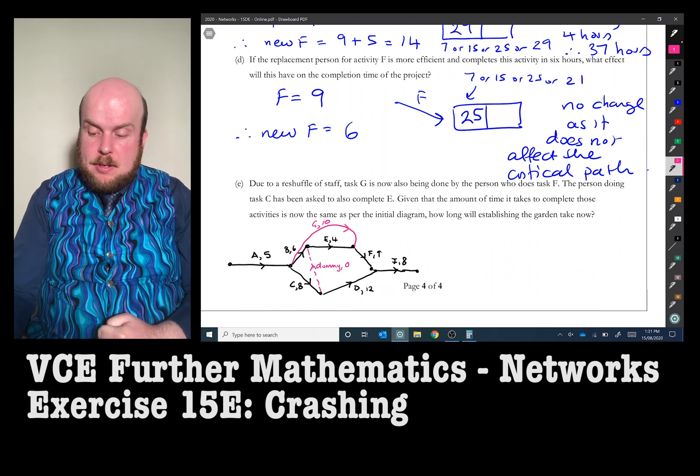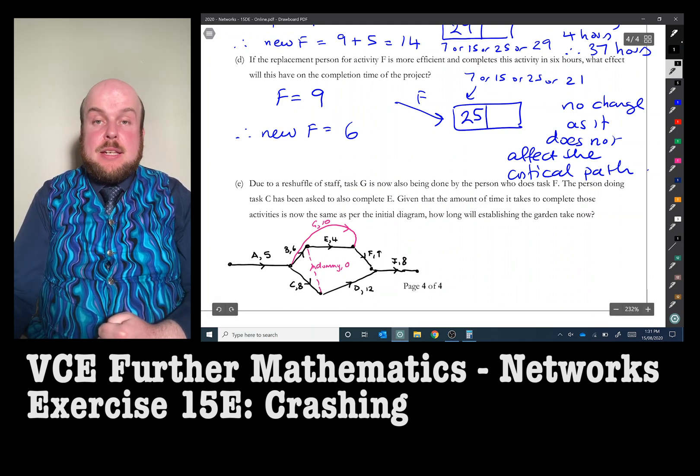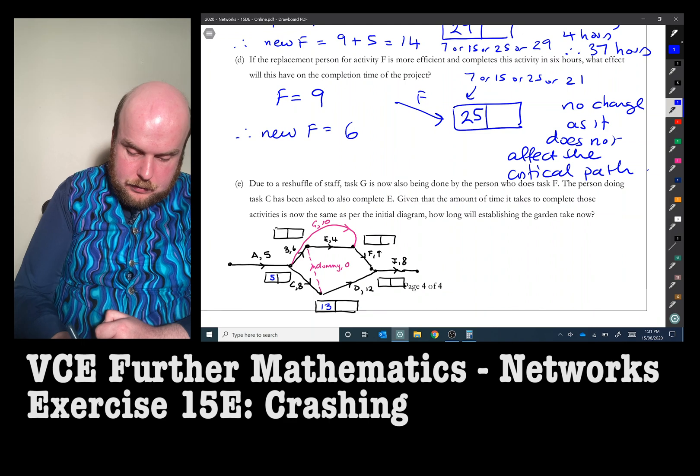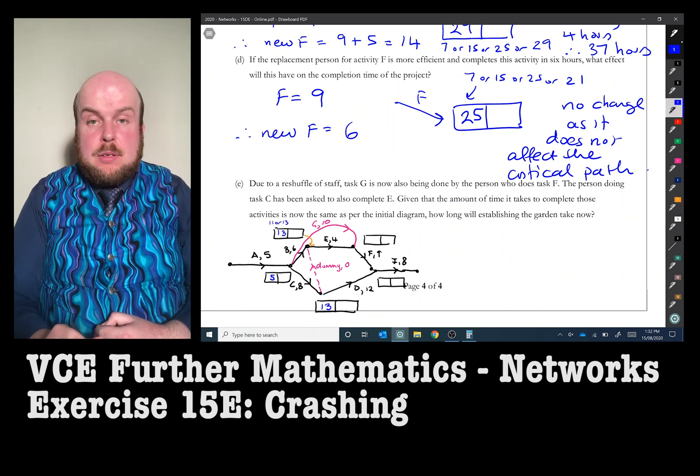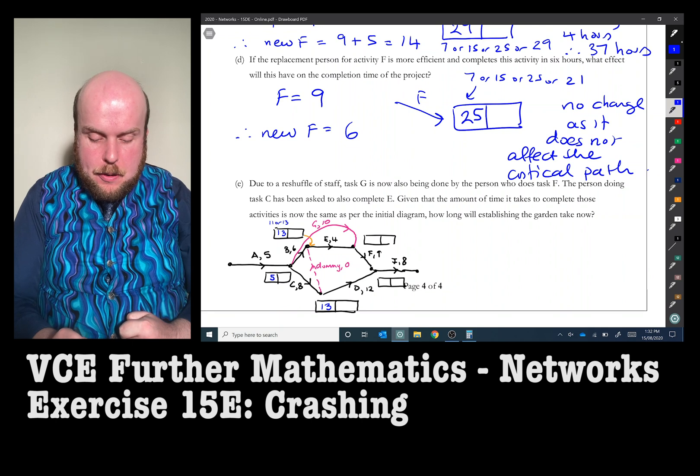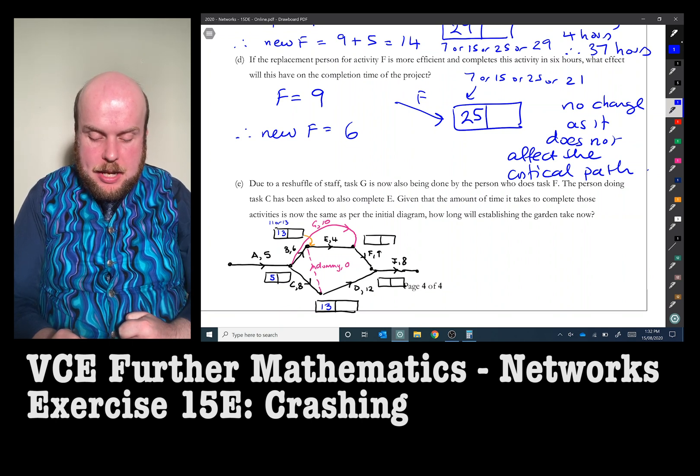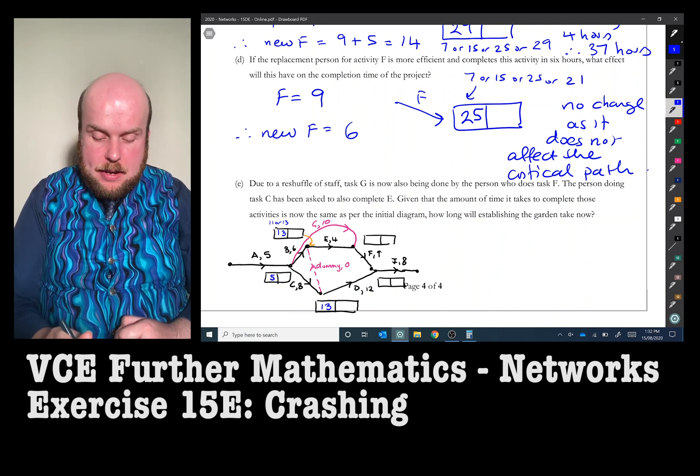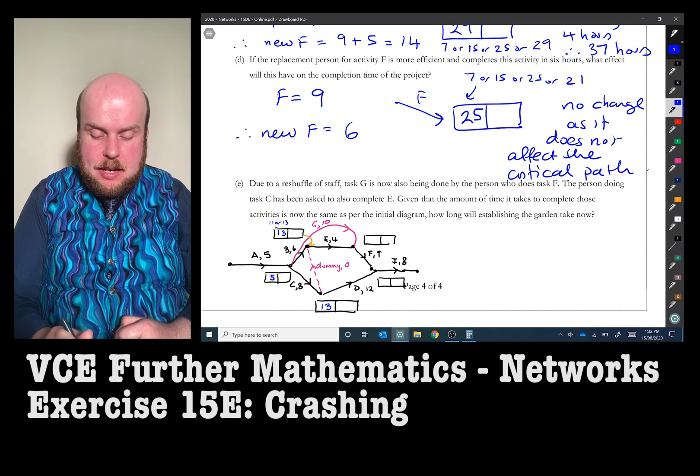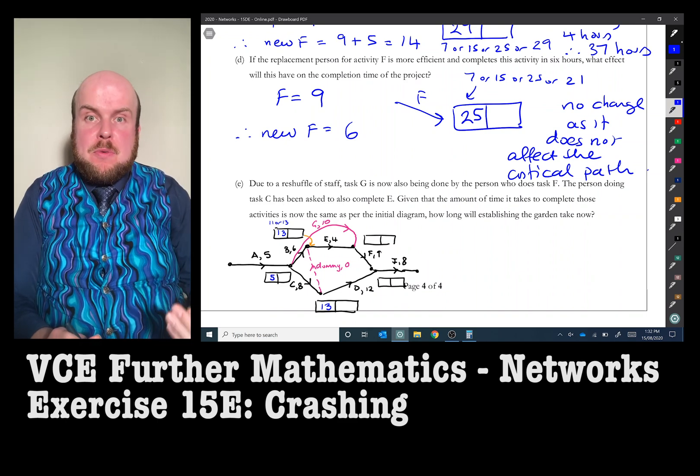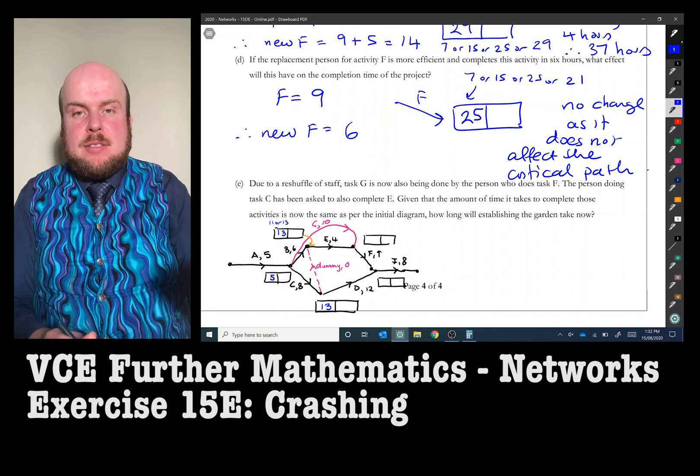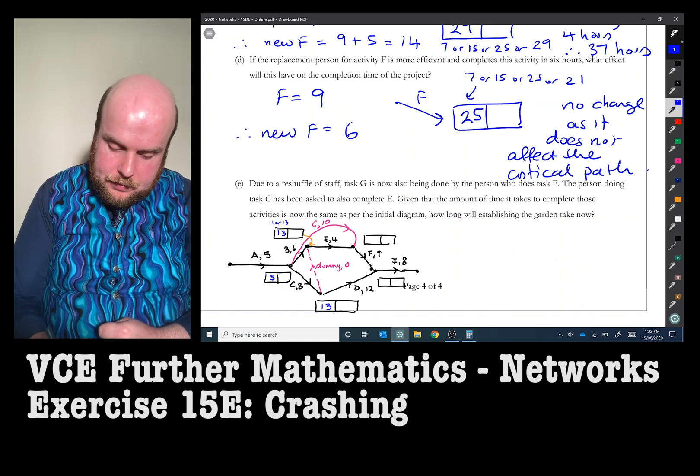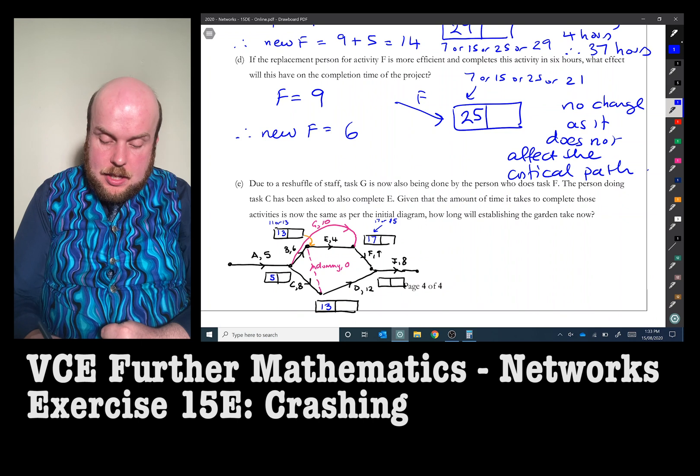So now that we have rewritten this, we can now go and calculate the new times. I'll just pause my working to show you that for activity B, we have the choice of either going five plus six, which is 11, or we can go by the dummy activity or C because that was going to be 13. And we always pick the slowest predecessor or whatever is the biggest number. So that has to now be 13.